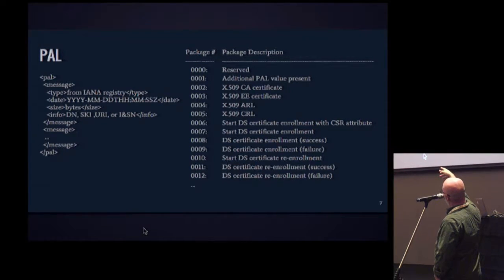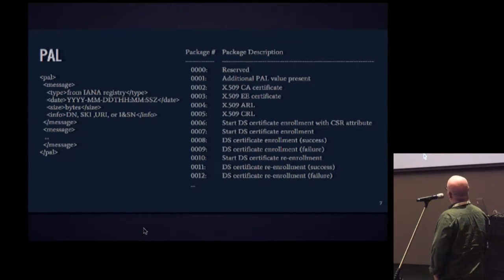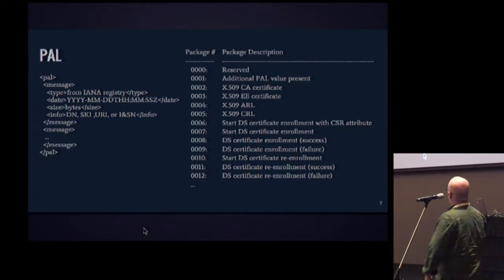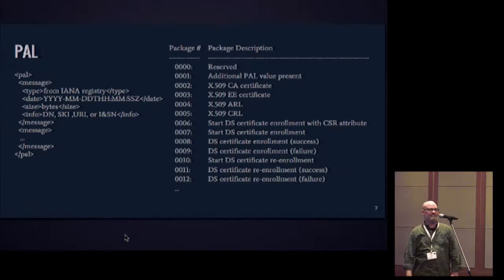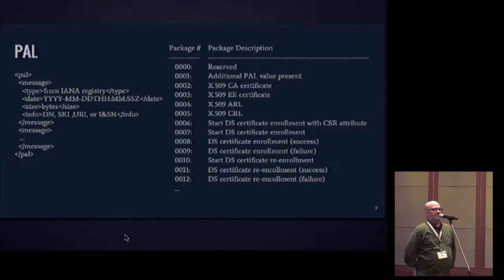The next slide shows the PAL format. I duck because it's XML — it's a PAL with a bunch of messages, it's got a type from an IANA-registered registry, a name, pointer, date, and size info. Because a PAL could be a million entries long, you can clip it and have one PAL point to another PAL. It's basically a manifest format. People are using it. Someone asked whether I invented it — yes, essentially, but there's no standardized manifest format. Someone suggested using JSON instead.